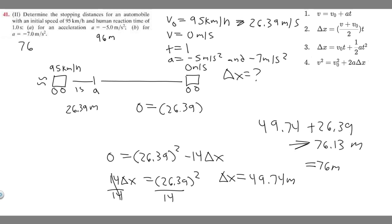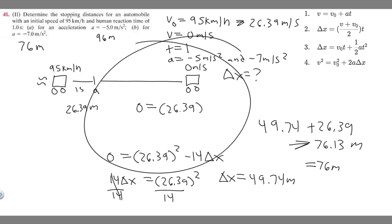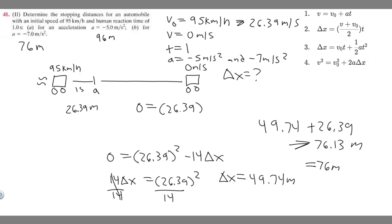So for acceleration of -7 m/s² the answer is 76 meters. These are your final answers, and that's how you solve this problem.